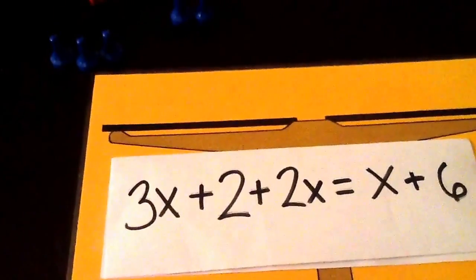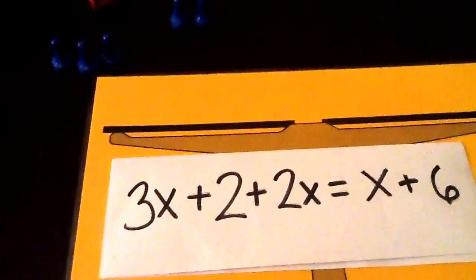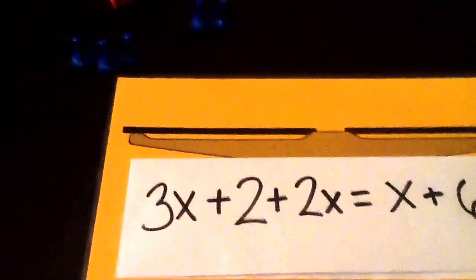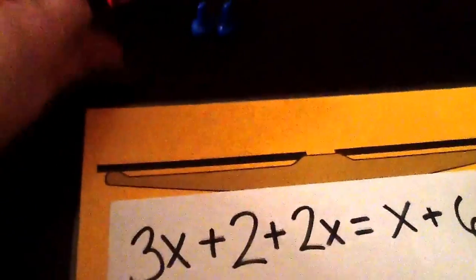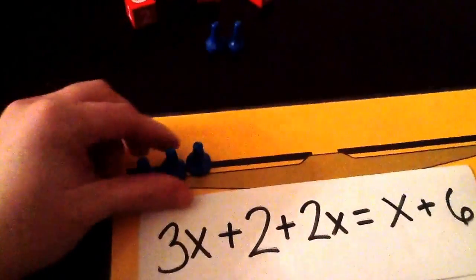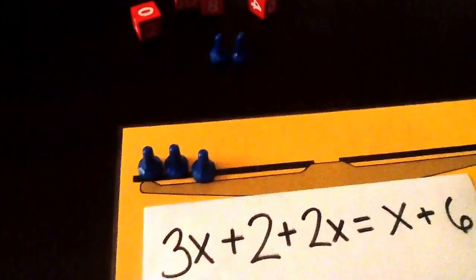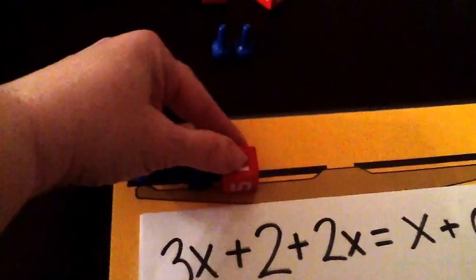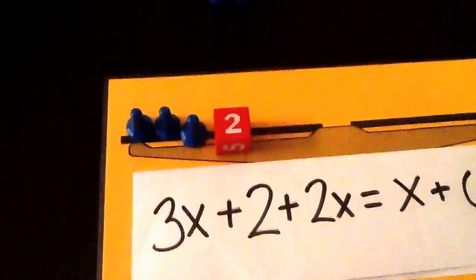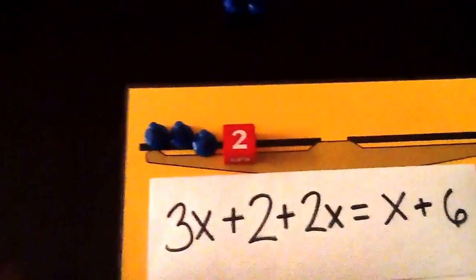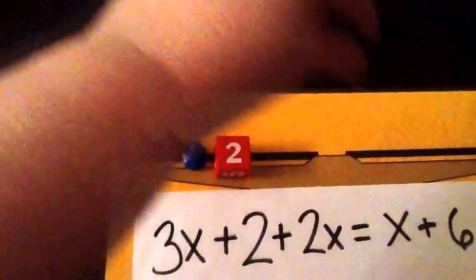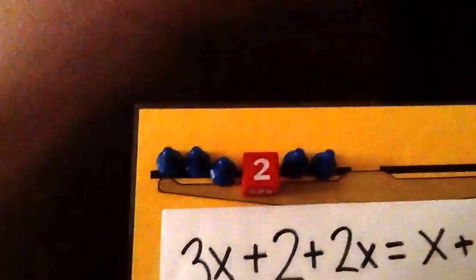So here we have 3x plus 2 plus 2x, so we're going to set that up on the left hand side. So we have 3x's. We're going to put that here. Then we have a 2. So we will put our number 2 facing up. Then we have 2 more x's. So all of that is on the left hand side.